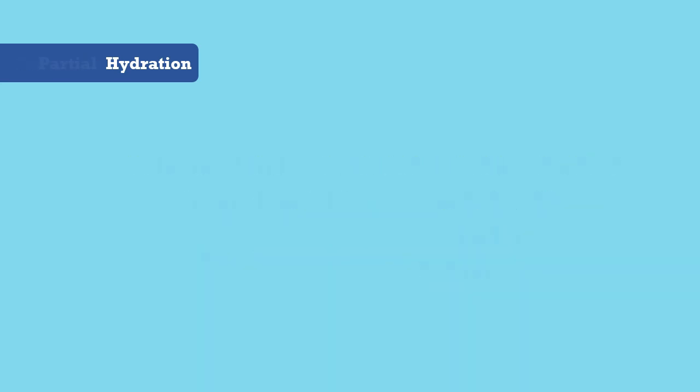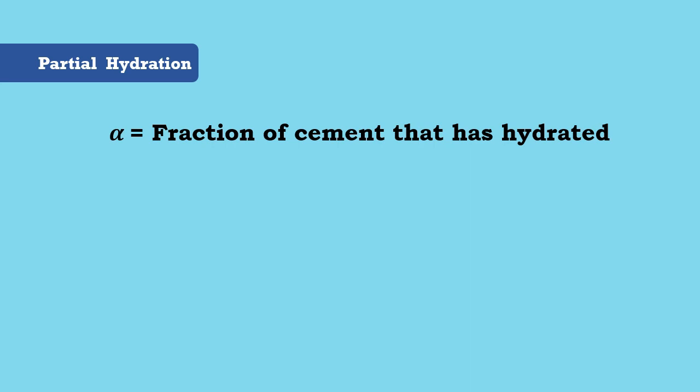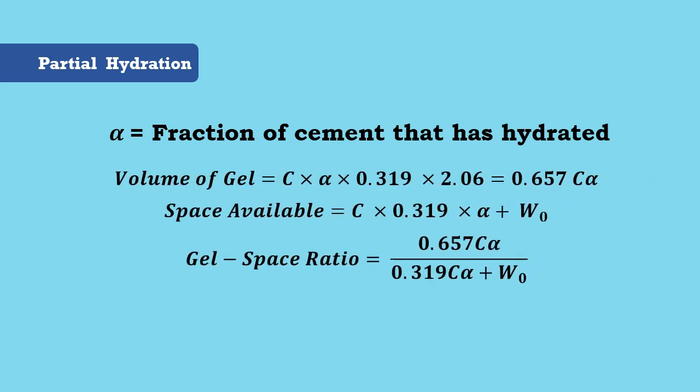For partial hydration, let α be the fraction of cement that has hydrated. Then, volume of gel and space available is expressed. Finally, the gel space ratio equation becomes...